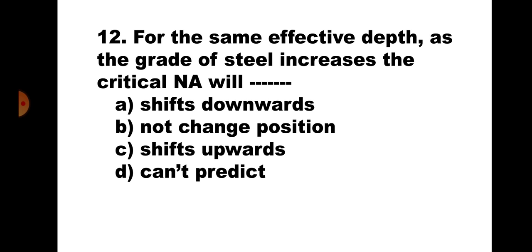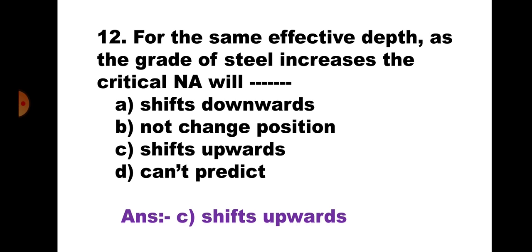Question number twelve: For the same effective depth, as the grade of steel increases the critical neutral axis will — (a) shift upward, (b) not change position, (c) shift upwards, (d) can't predict. For Fe 250 it is 0.53d, for Fe 415 it is 0.48d, for Fe 500 it is 0.46d — so as grade of steel increases the neutral axis shifts upward. The correct answer is (c) shifts upwards.